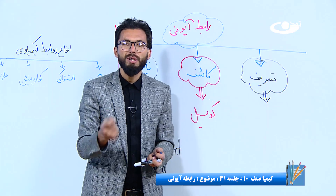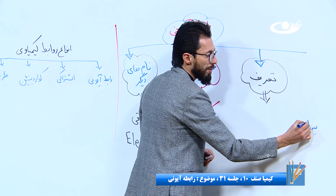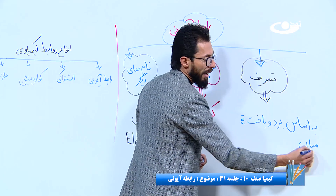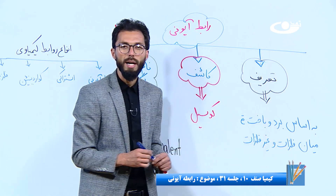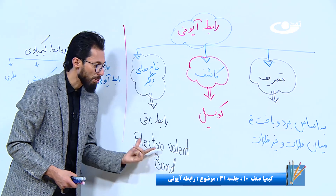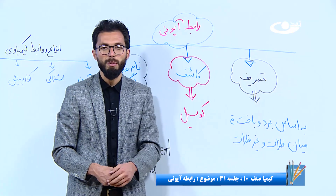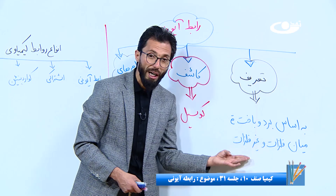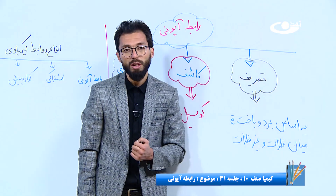تعریف رابطه آیونی: رابطه آیونی به اساس برد و باخت الکترون بین اتم‌های فلز و غیر فلز به وجود می‌آید. پس در قسمت روابط آیونی سه موضوع اساسی داریم: نام‌های دیگر، کاشفش، و تعریفش. از تعریف میتوان دو سوال ساخت: بین کدام اتم‌ها به وجود می‌آید (فلز و غیر فلز) و به اساس چی (برد و باخت الکترون).